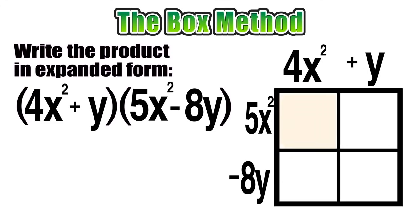Our first section, 5x squared times 4x squared, is equal to 20x to the fourth power. Remember, you add the exponents when you multiply with bases that are the same. For the top right section of our box, we need the product of 5x squared and y, which is just 5x squared y.